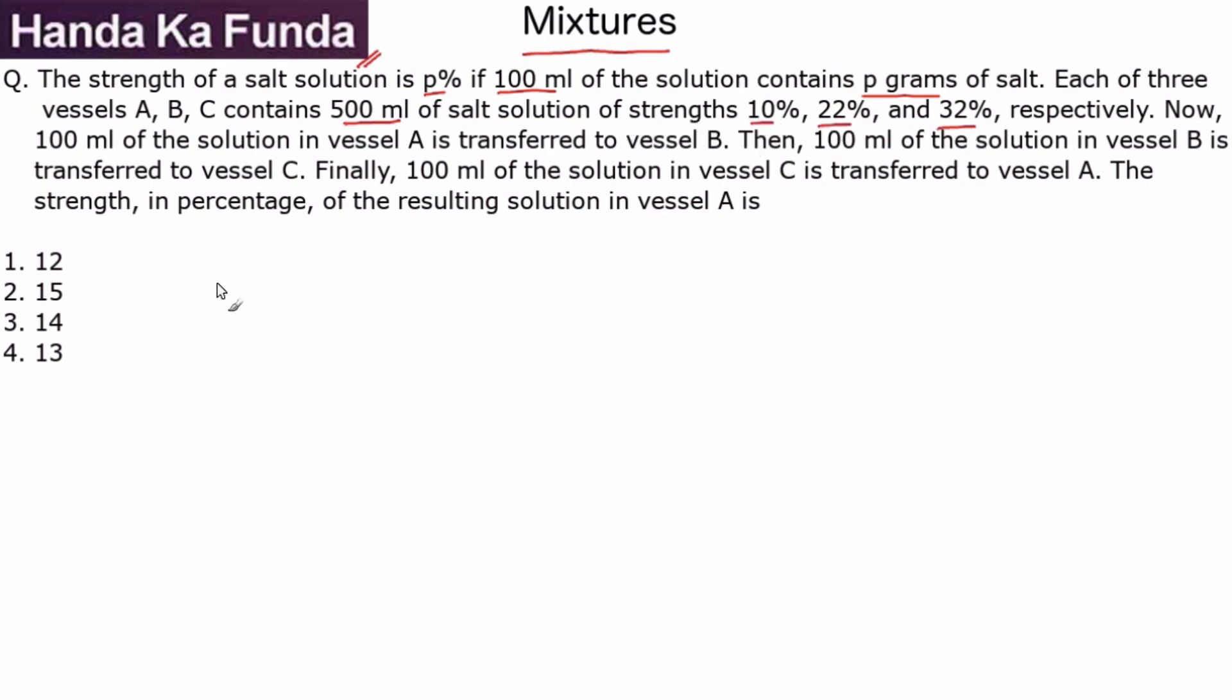This means A has a 10 percent solution so A has 50 grams in a total of 500 ml. B on the other hand has 22 percent so B has 110 grams out of a total of 500 ml, and C has a total of 32 percent which is 160 grams in a total of 500 ml. So this is the initial state: 10 percent, 22 percent, 32 percent out of 500 ml.